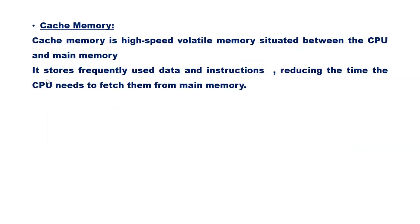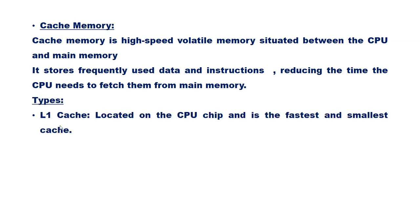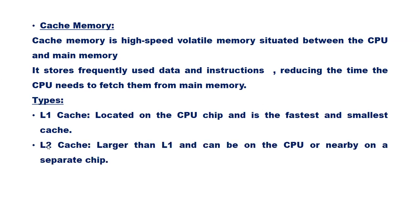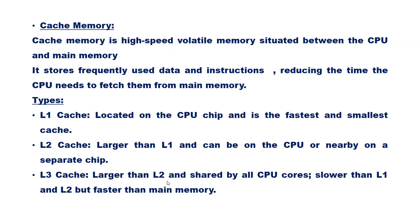Cache memory is high-speed volatile memory situated between the CPU and main memory. It stores frequently used data and instructions, reducing the time the CPU needs to fetch them from main memory. Types of cache memory include L1 cache, located on the CPU chip and being the fastest and smallest; L2 cache, which is larger than L1 and can be on the CPU or a nearby separate chip; and L3 cache, which is larger than L2, shared by all CPU cores, and slower than L1 and L2 but faster than main memory.